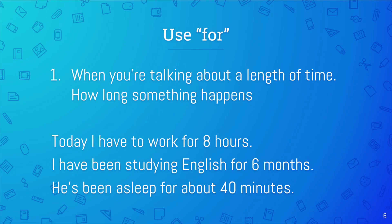'For' is a little bit different. You want to use 'for' when you're talking about a length of time — how long something happens. Today I have to work for eight hours, so maybe you start work at 11 a.m. and finish at 7 p.m. I have been studying English for six months — this means that six months ago, you started studying English. He's been asleep for about 40 minutes.